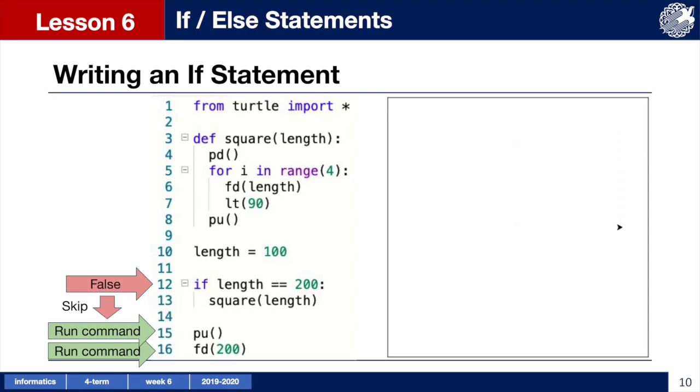We have now edited our code by changing the variable length to have a value of 100. When the turtle checks the condition now, it is false, because length is not equal to 200. So the turtle skips the indented commands and moves to complete the commands that follow the if statement, where it lifts the pen up and moves forward for 200 pixels.